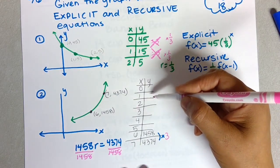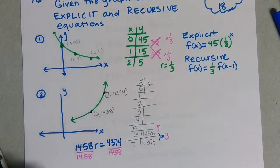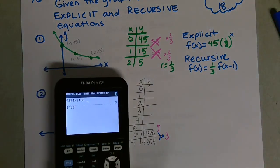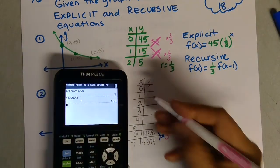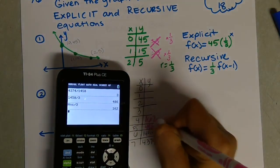Now I need either my zero term or my first term. To go backwards, I'm going to take 1458 and divide it by 3, so this should be 486. Divide it by 3 again: 162.